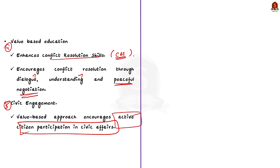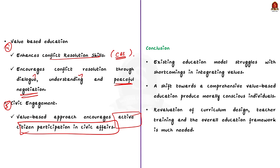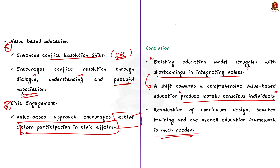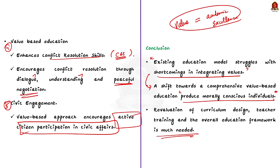In conclusion: the existing education model struggles with shortcomings in integrating values, but a shift towards a more comprehensive value-based education can produce morally conscious individuals. It necessitates a re-evaluation of curriculum design, teacher training, and the overall education framework. We must prioritise values and ethics alongside academic excellence. In this discussion, we saw about the issues in our current education model and the advantages of moving to value-based education.